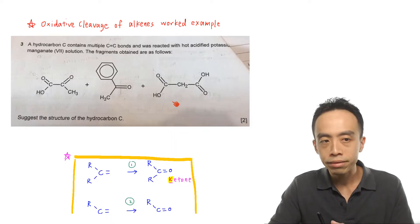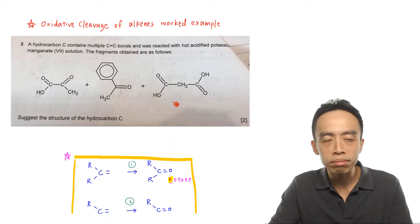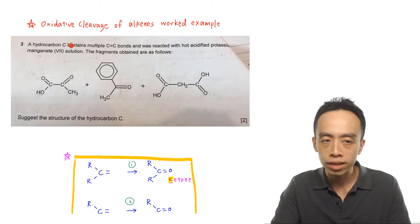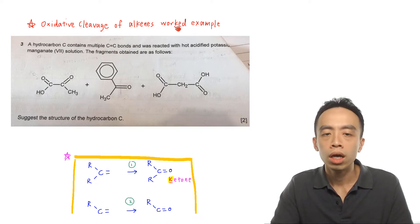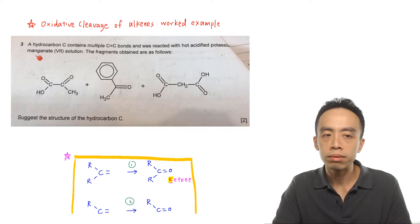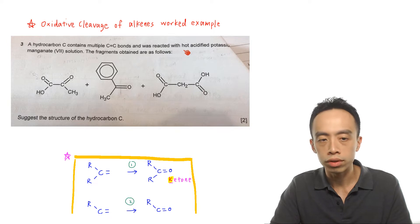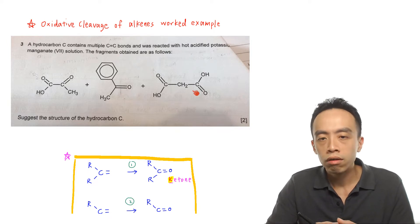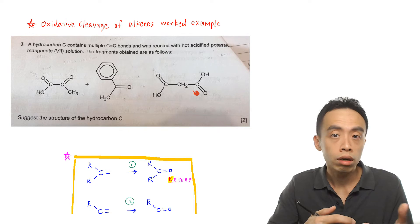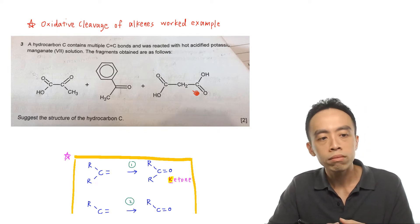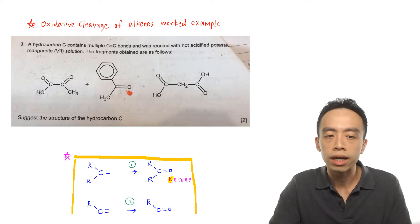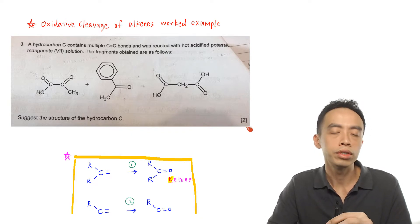The question goes something like this: I have a hydrocarbon C which contains multiple C double bond C bonds and was reacted with hot acidified potassium permanganate solution. The fragments obtained are as follows — we have three fragments from the product of strong oxidation of alkenes. We want to suggest the structure of hydrocarbon C, and two marks are awarded for this question.